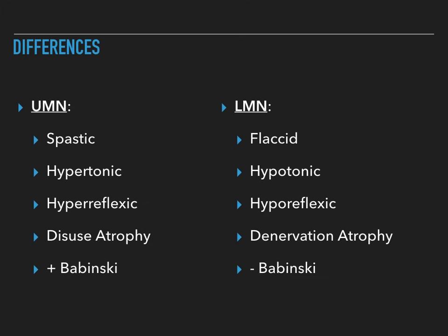Let's talk about these differences. Spastic versus flaccid: a spastic paralysis means the muscle is in spasm, while a flaccid paralysis means the muscle is limp and not really contracting. Hypertonic refers to the tone — there is hypertone to the muscle because it is in spasm. Think of keeping your biceps contracted: you'll have a hypertonic biceps, as opposed to when it's flaccid and relaxed, which would be hypotonic.